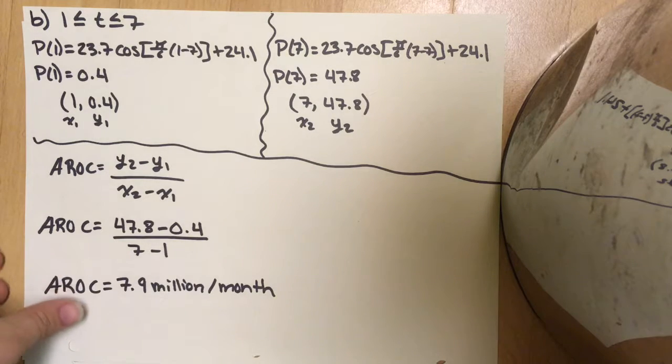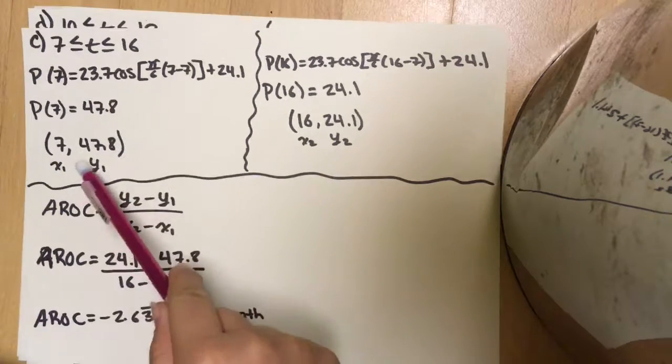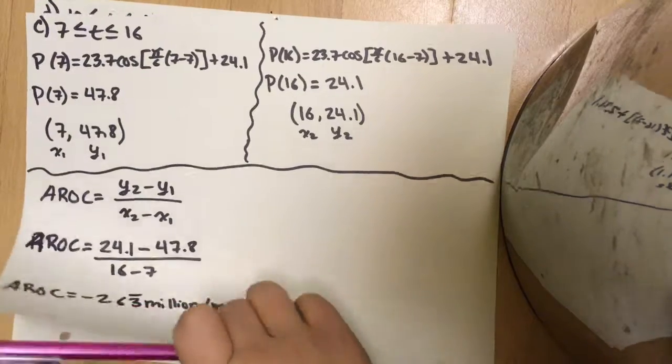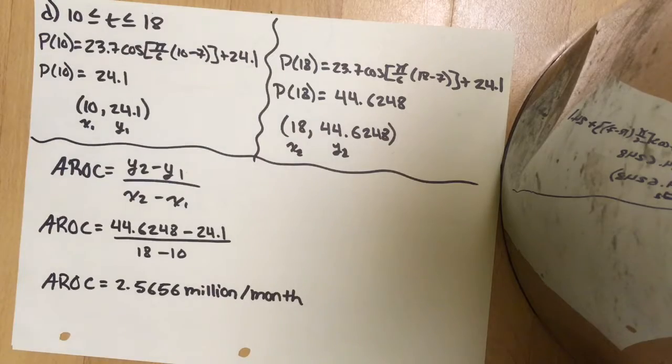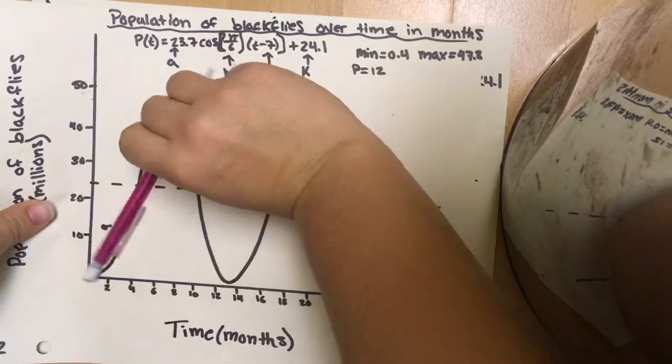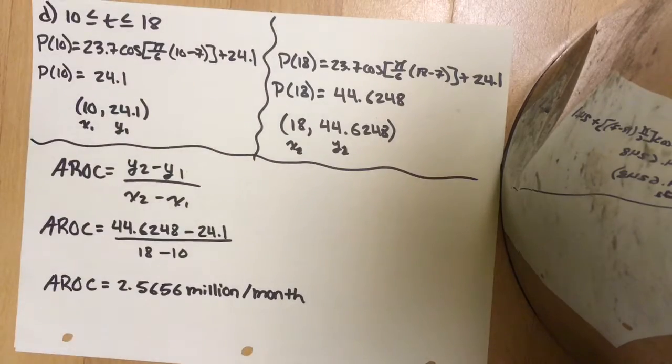We did rule out the other two as not being the greatest rate of change, but just to make sure I did calculate them. As we predicted, C did end up being a negative slope. I did the same thing for all the others, found my y values, and calculated it. It is going down—we calculated it properly to be negative. D, like we said before, probably will not be the greatest rate of change because the slope is not as steep. We calculated it to be not as steep.